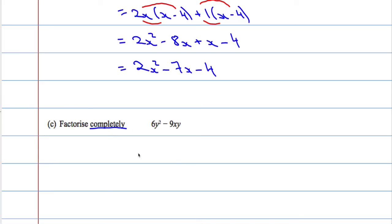So what number can I divide into 6 and 9? 3. And what letter can I divide into y squared and xy? It must be y. So now I ask myself the question: what do I multiply 3y by to make 6y squared? 3 times 2y squared, and y times y will give me y squared.